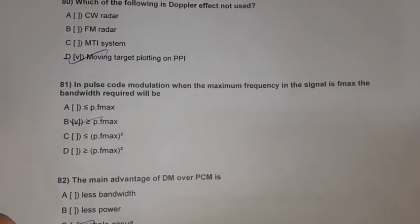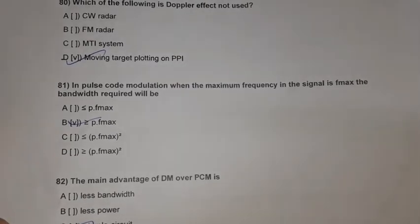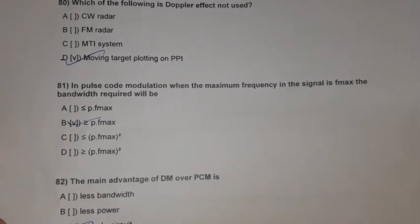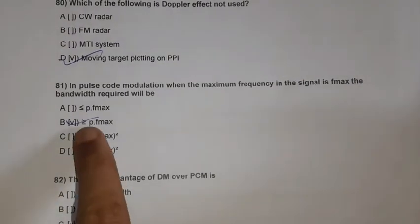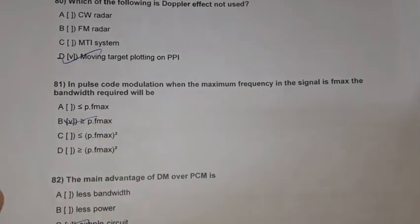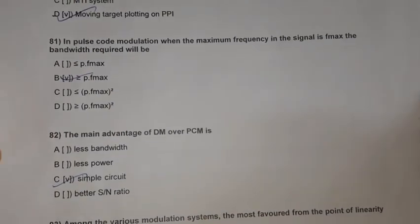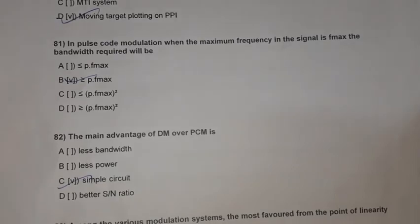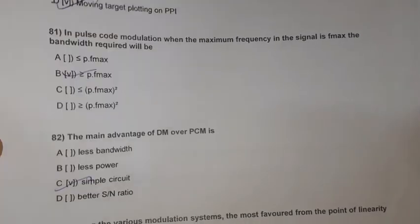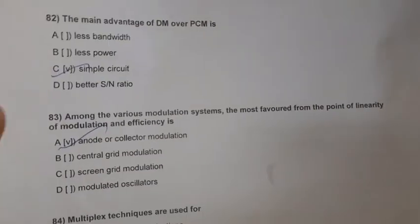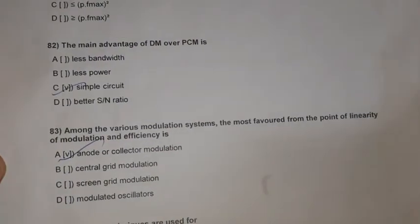Question 81: In pulse code modulation, when the maximum frequency in the signal is Fmax, the bandwidth required will be greater than or equal to P × Fmax. Question 82: The main advantage of DM over PCM is that delta modulation has a simpler circuit.